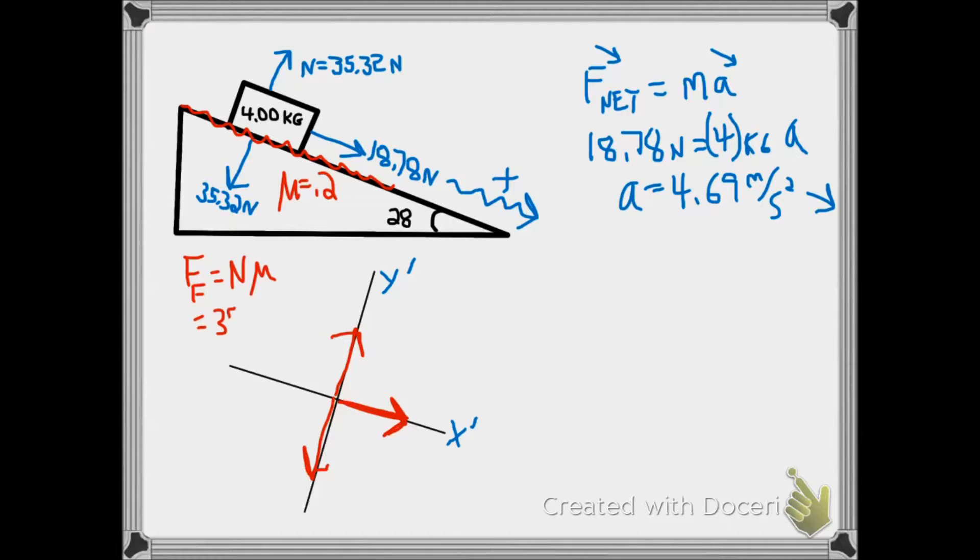And that's going to give us a friction force that's going to be slightly smaller than the 18.78 newton force or 7.06 newtons opposing motion.